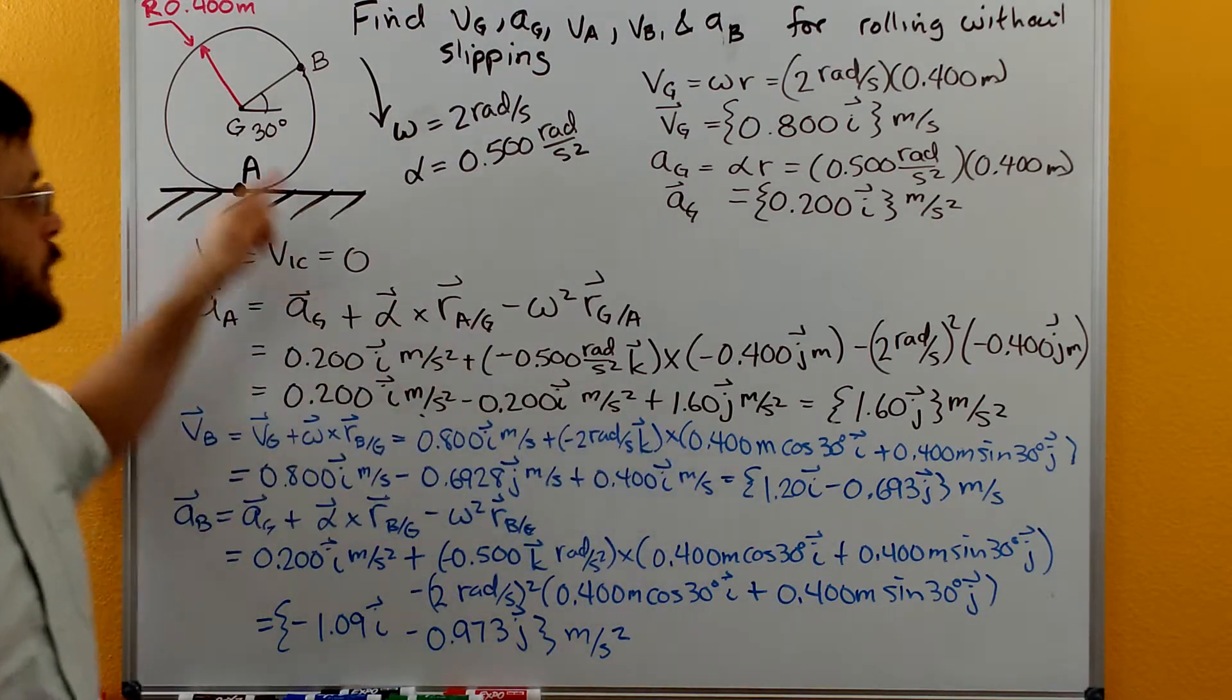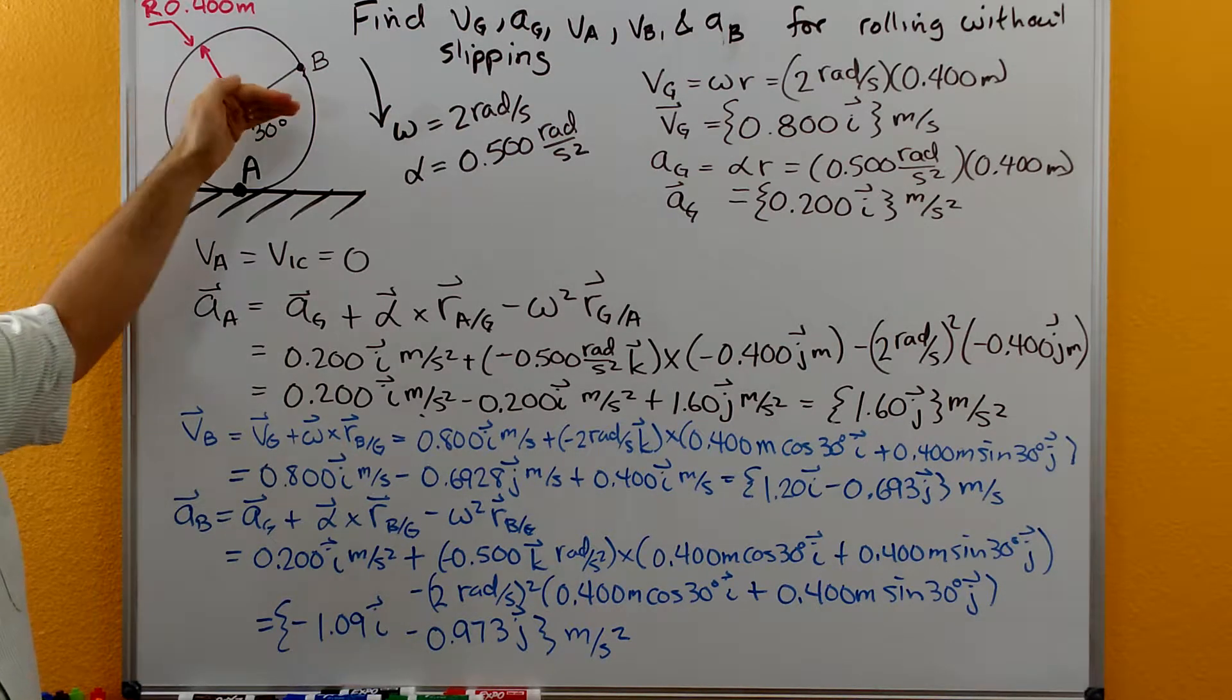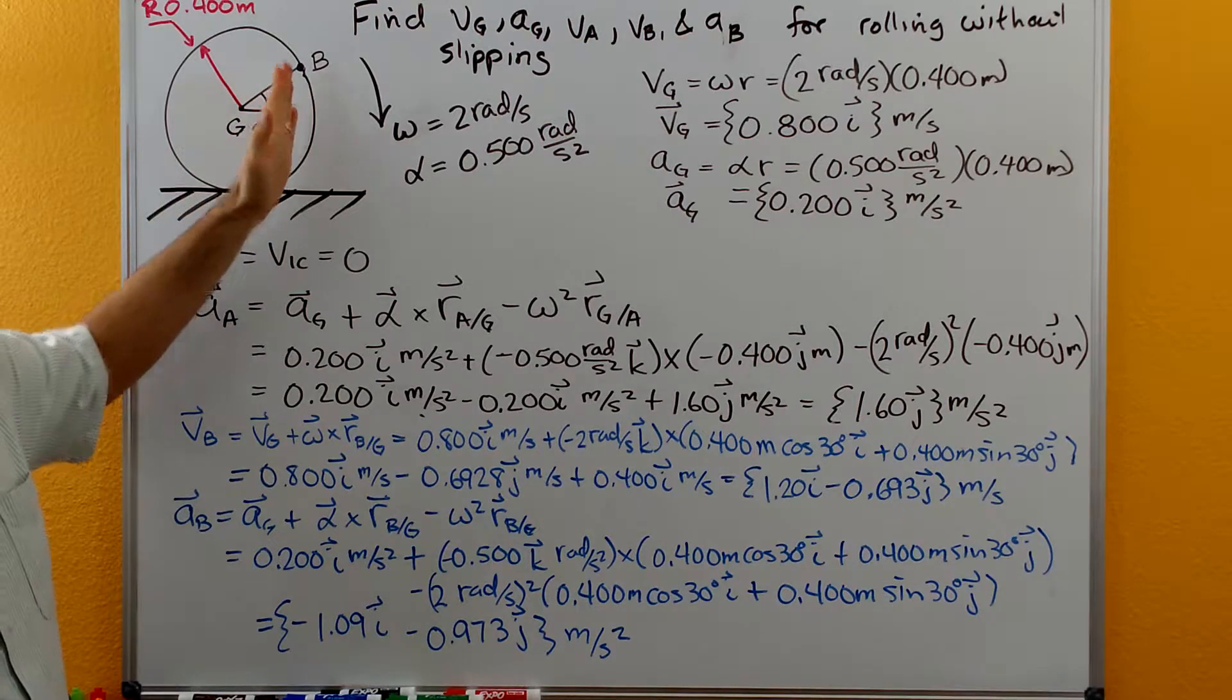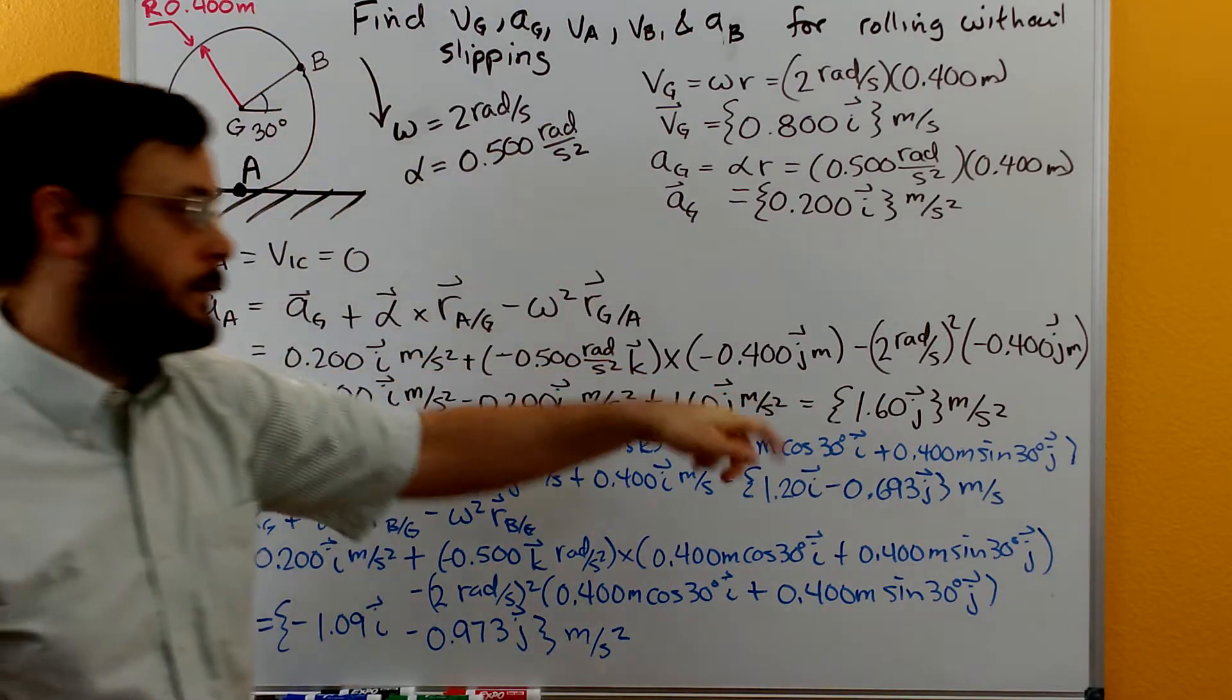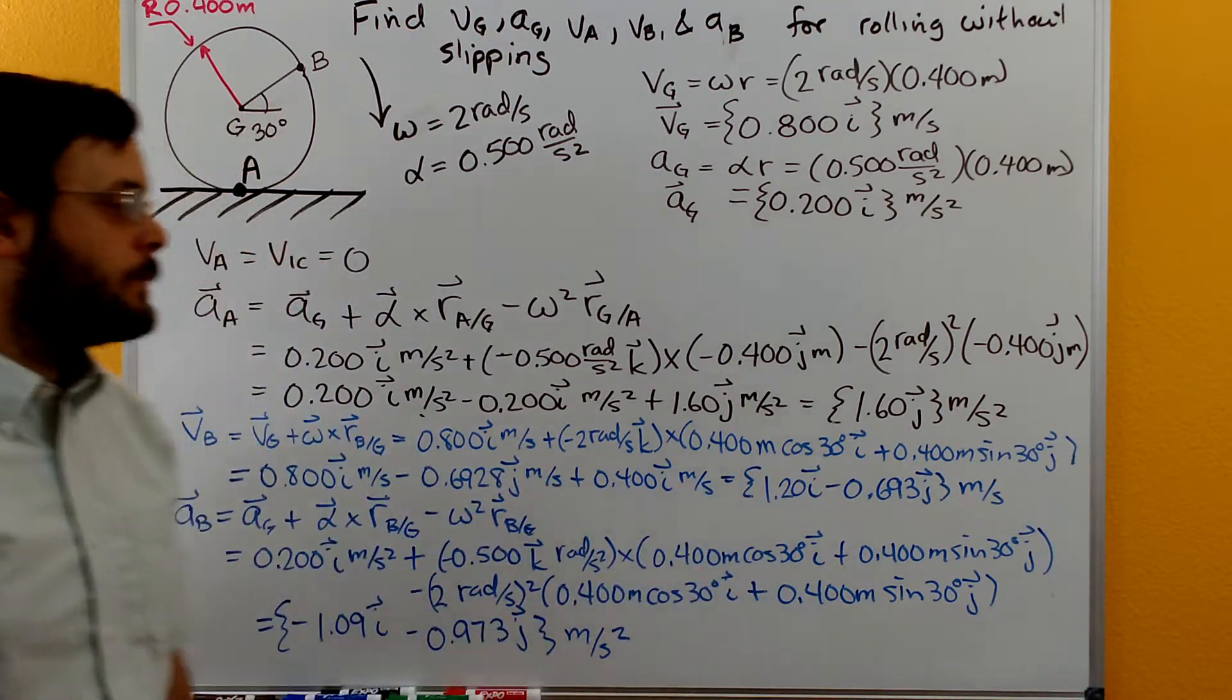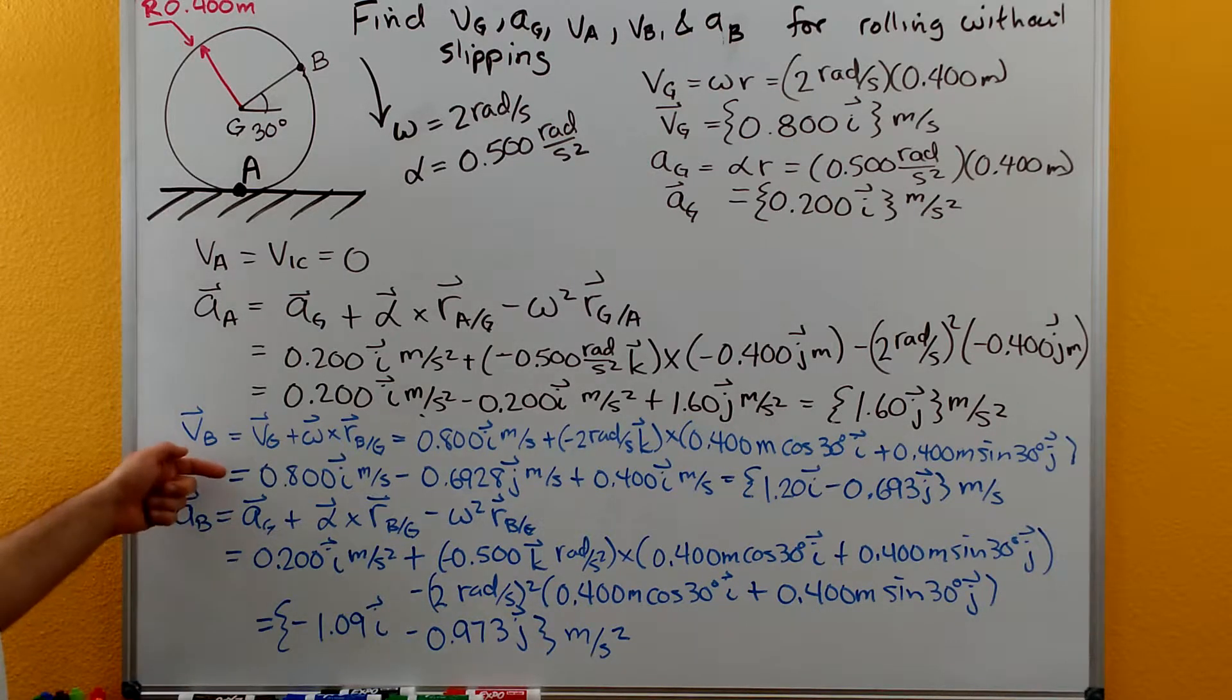The position vector from G to B is going to be the 0.4 meters radius times the cosine of 30 degrees plus the 0.4 meters radius times the sine of 30 degrees in J. So then the vector arithmetic here that gives us the 1.2 I minus 0.693 J meters per second for the velocity at B.